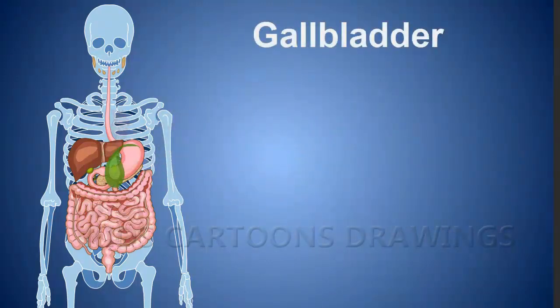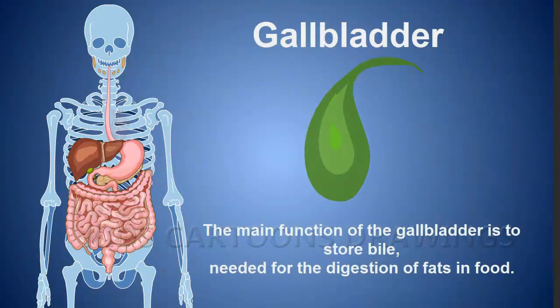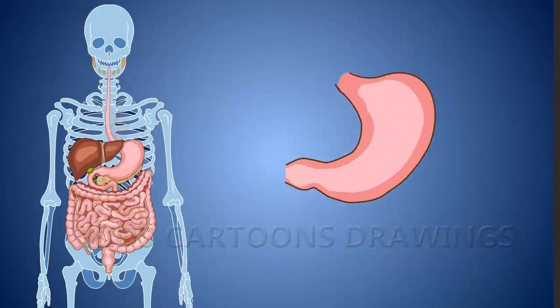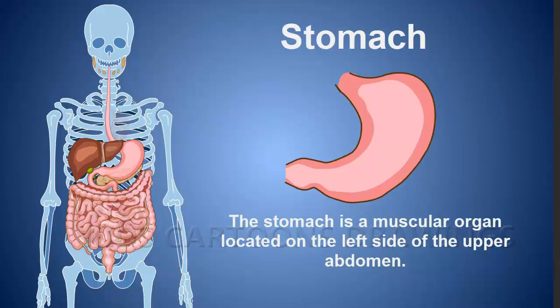Gallbladder: The main function of the gallbladder is to store bile needed for the digestion of fat in food. Stomach: The stomach is a muscular organ located on the left side of the upper abdomen.